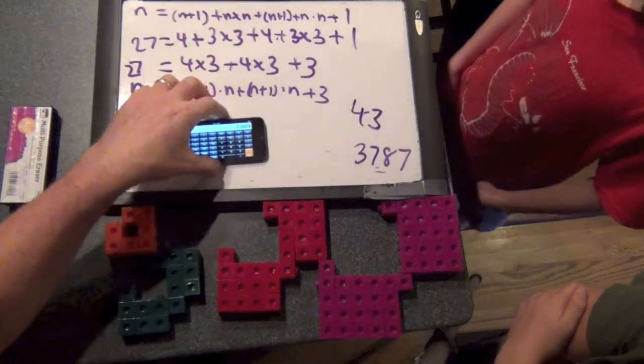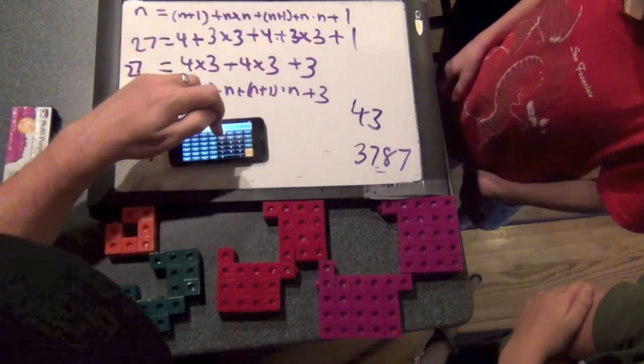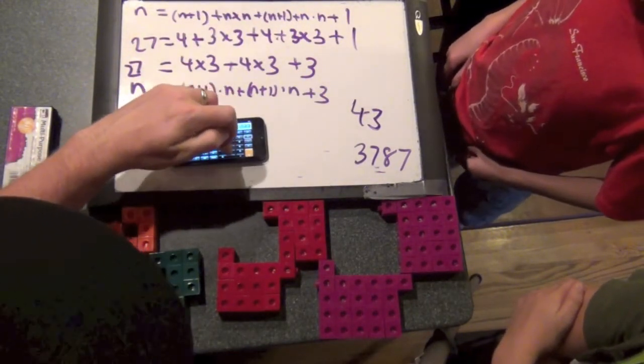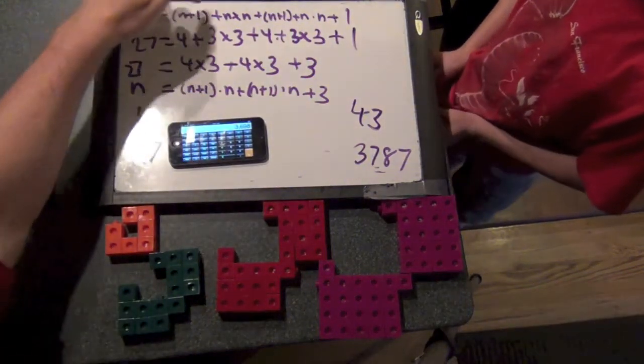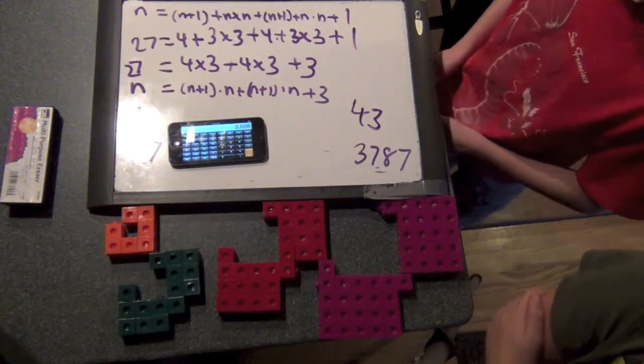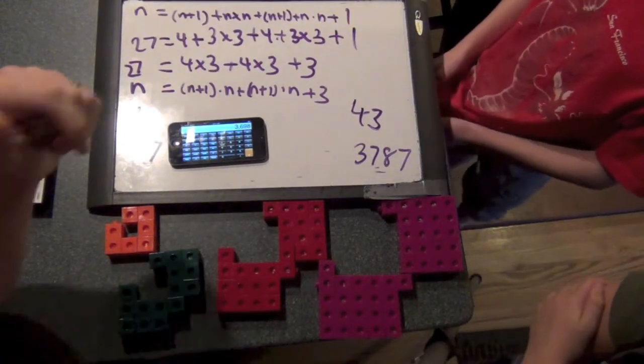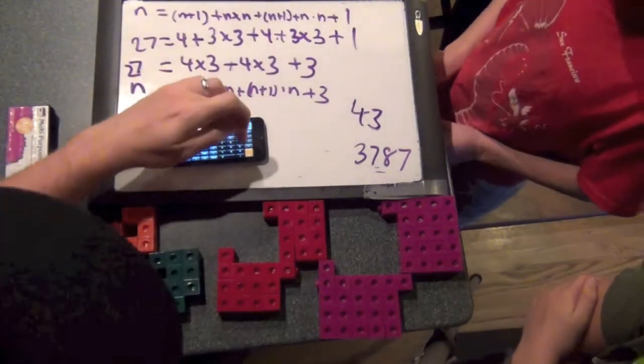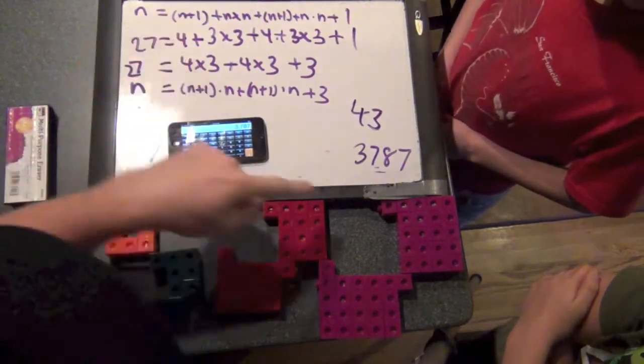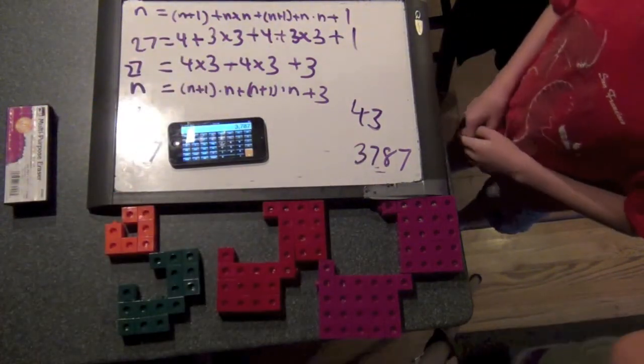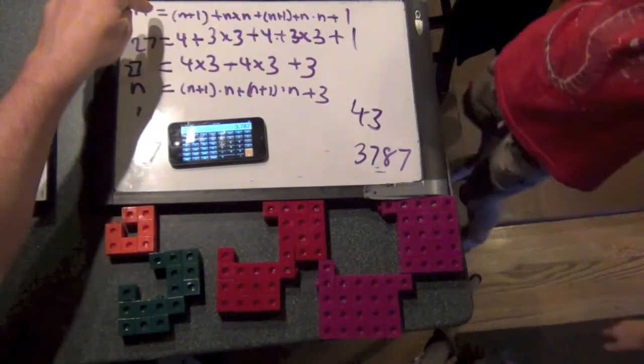Now we have to do that twice, right? So times 2. Then we have to add 44 and 44. What's 44 plus 44? It's 88. And then plus 1 is? 89. So let's do plus 89. And we get 3787. Yeah. Cool. So that's this pattern up here.